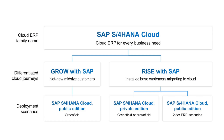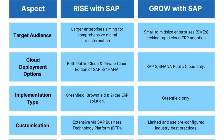Key differences between Grow with SAP and Rise with SAP include infrastructure options and customization capabilities. Grow with SAP uses SAP's data centers in regions like Japan, Singapore, or Cloud4C in Vietnam, while Rise allows businesses to choose cloud providers like Google Cloud, AWS, or Azure. Grow follows a fit-to-standard approach with industry best practices, whereas Rise allows more flexible customization. With cloud ERP and SAP Business Technology Platform (SAP BTP), businesses can innovate without altering core applications, simplifying system upgrades and maintenance.